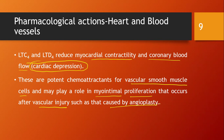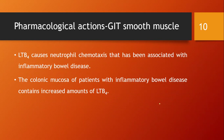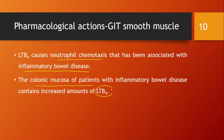On GIT smooth muscle: LTB4 causes neutrophil chemotaxis, which has been associated with inflammatory bowel disease. This is confirmed by finding increased amounts of LTB4 in the colonic mucosa of affected patients.